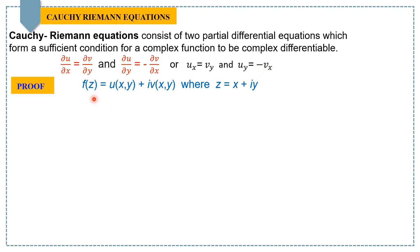Suppose we have a complex function f(z) = u + iv, where u is the real part and v is the imaginary part, and both are further functions of x and y.